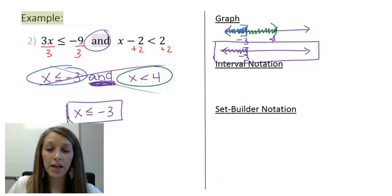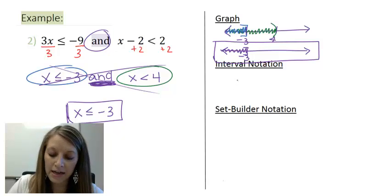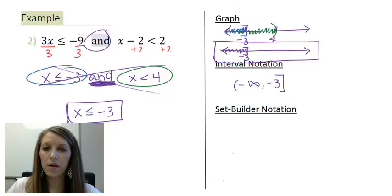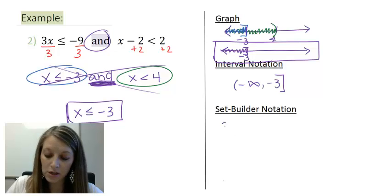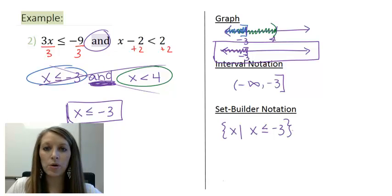And so, my interval notation would only be that interval there, negative infinity up to negative 3 with a bracket. And my set builder notation, again, the only place where there's an overlap. So, X is less than or equal to negative 3 in the proper notation.